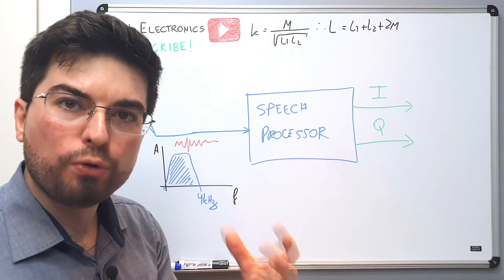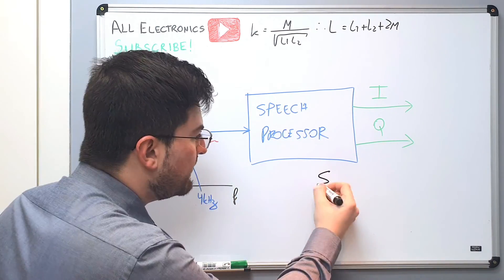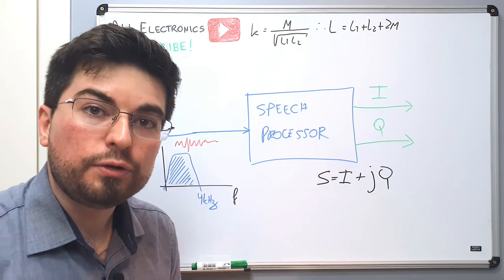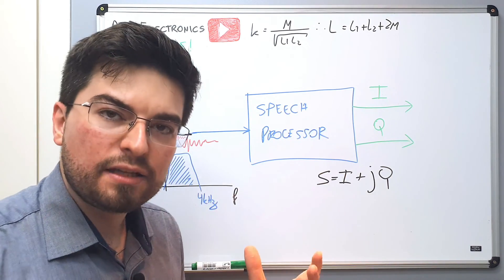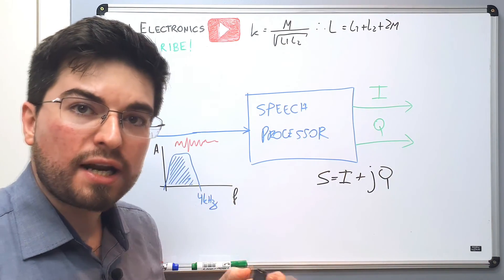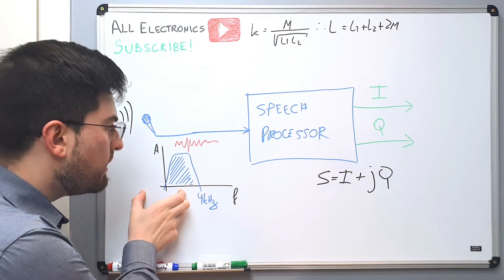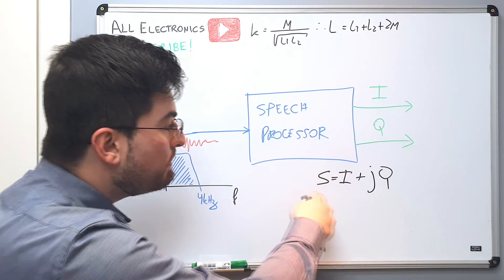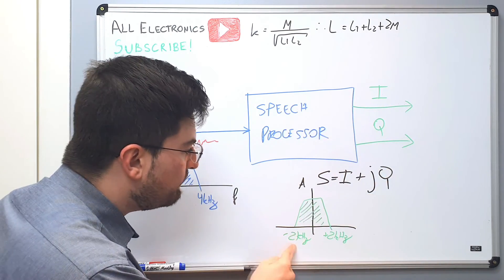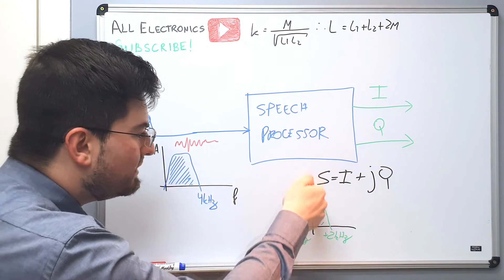The I and Q signals compose an analytical representation of the input signal. An analytical representation — signal equals I plus jQ — is an imaginary number that can represent negative frequencies, and this is needed to compose a zero IF baseband signal. This means that we're going to down-convert the zero to four kilohertz input spectrum, centering it at zero hertz. So the output spectrum of this imaginary signal generated by the I and Q components spans from negative two kilohertz to positive two kilohertz — a zero IF signal.